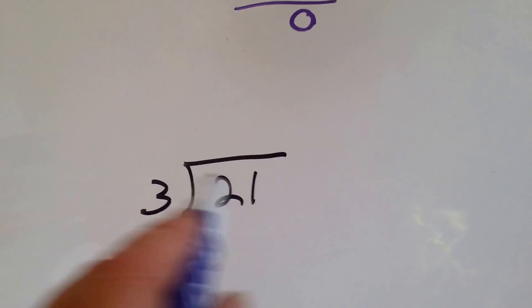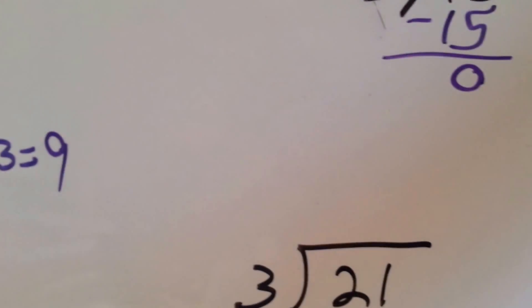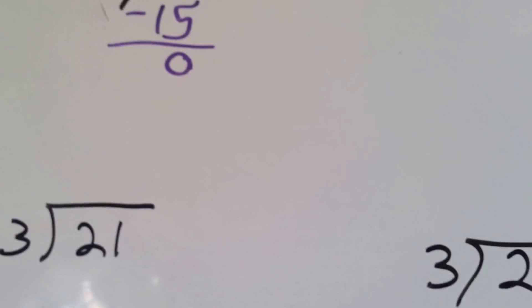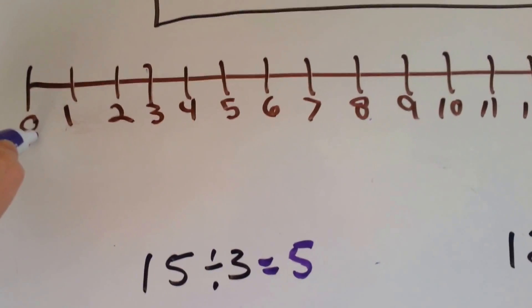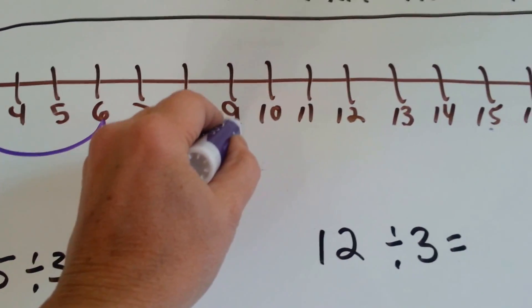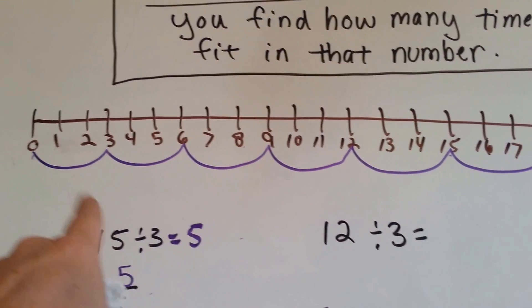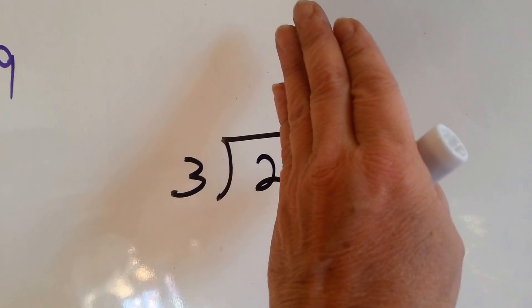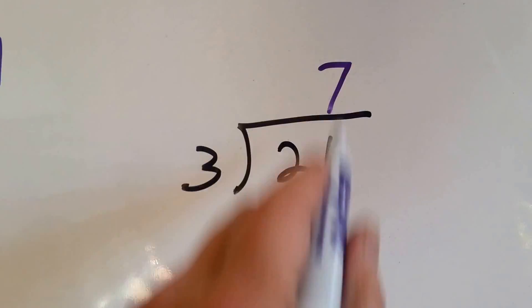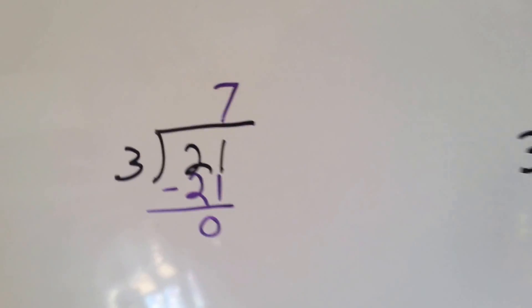3 goes into 21 — how many times does 3 fit into 21? Let's use the number line. We're going to get to 21, jumping by 3's. How many jumps did we make? 1, 2, 3, 4, 5, 6, 7 jumps. 3 goes into 21 seven times. We didn't put 3 into 2 — we put 3 into 21, so that's why it goes over the 1's place. 3 times 7 is 21. We do our subtraction, get 0, and we've done it correctly.